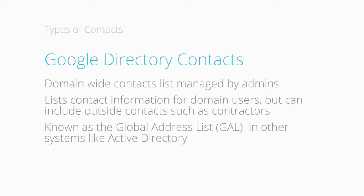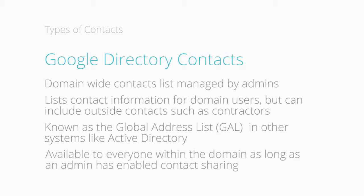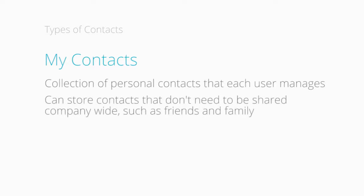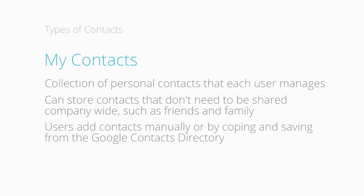Google Apps Directory is available to everyone within the domain, but only if the administrator has enabled contact sharing. The other type of contacts is each user's My Contacts. My Contacts is a list of personal contacts that each individual user manages. This is where users could store the details for their friends and family or business contacts that don't need to be shared in the shared directory. Users add contacts to this list manually or by copying and saving entries from the global Google Apps directory. My Contacts are private and are not shared with other users.